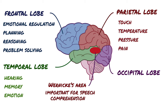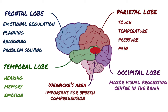The occipital lobe is the major visual processing center in the brain. The primary visual cortex receives visual information from the eyes. This information is relayed to several secondary visual processing areas, which interpret depth, distance, location, and the identity of seen objects.